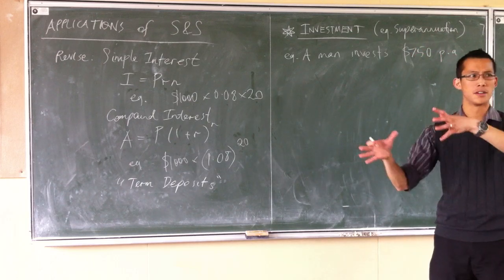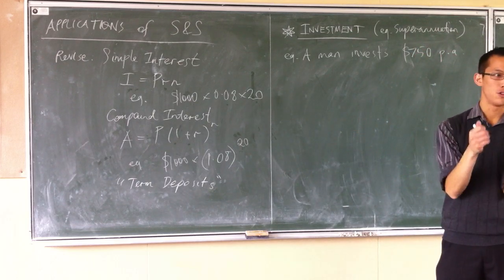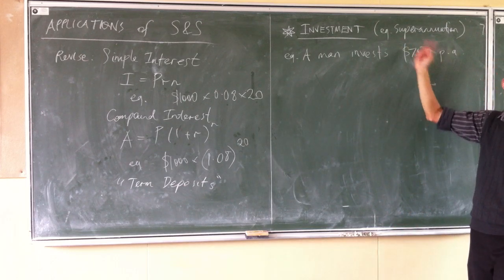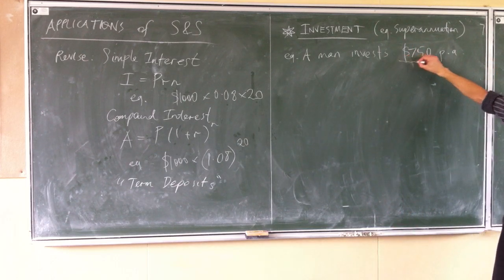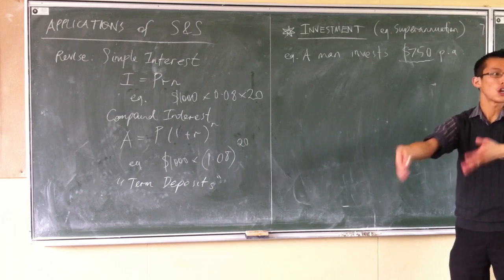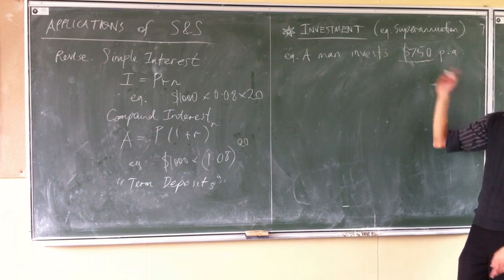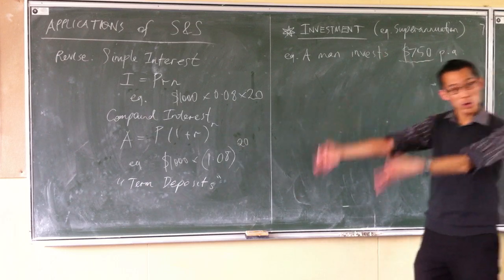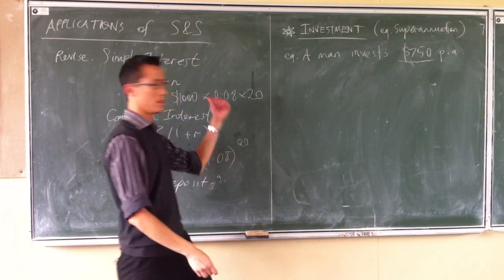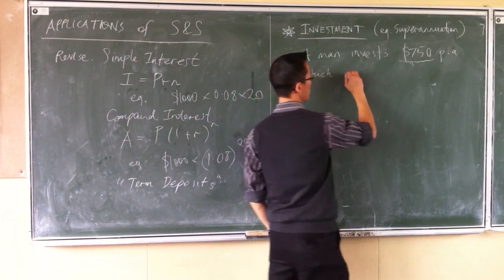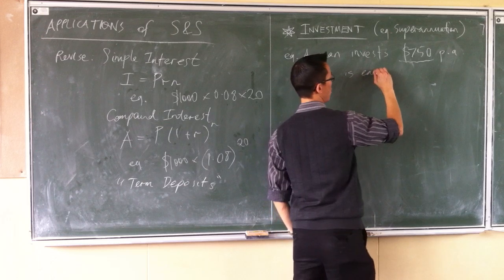This is the way superannuation funds work. Your employer, or the government rather, takes money out of your paycheck and you never get it. You never get to see it because it goes straight into what we call a superannuation fund. Takes out this amount and sticks it into an account that's earning interest for you, and you can only get it out at retirement. Every year he puts that amount in, but every year it's also earning interest.